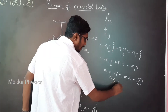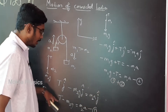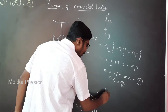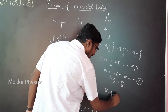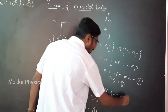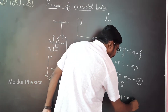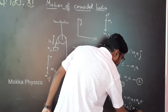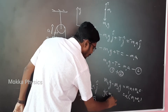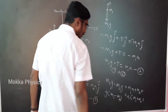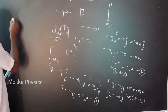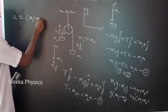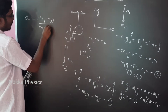We will add the two equations — equation one and equation two. The plus T and minus T cancel. Then m1g minus m2g equals m1a plus m2a. Factoring out, the acceleration is equal to (m1 minus m2) by (m1 plus m2) into g.